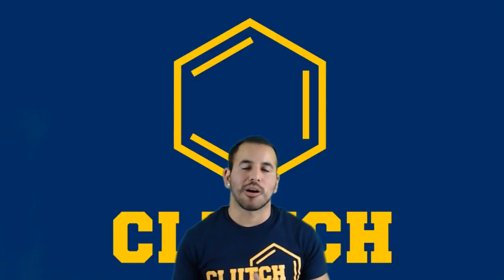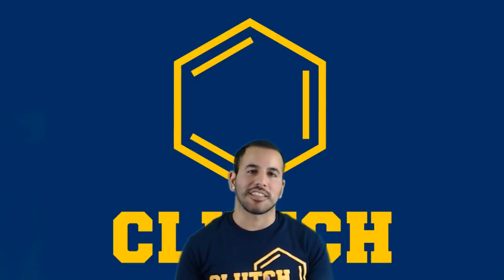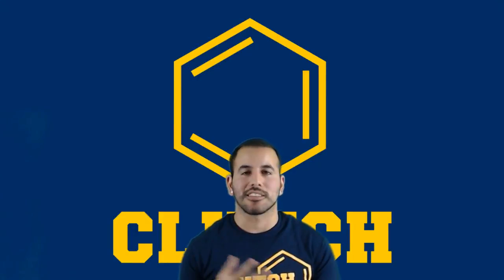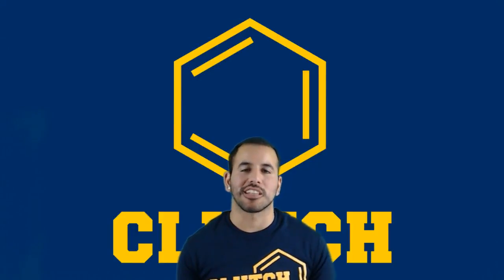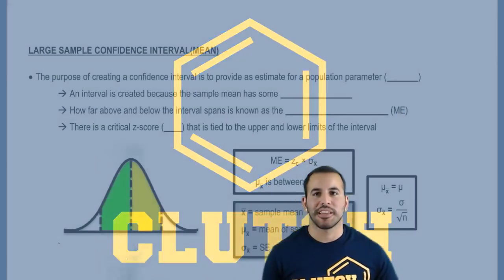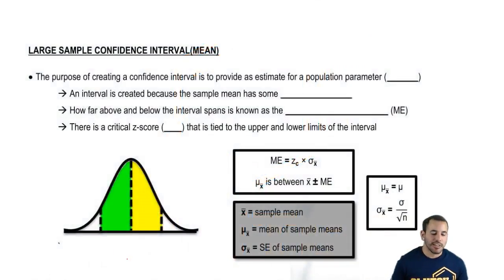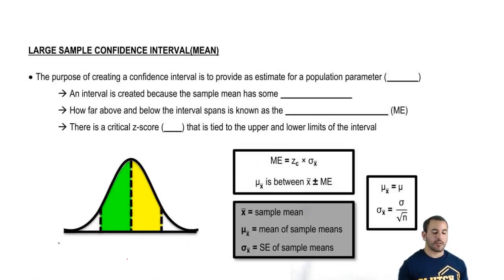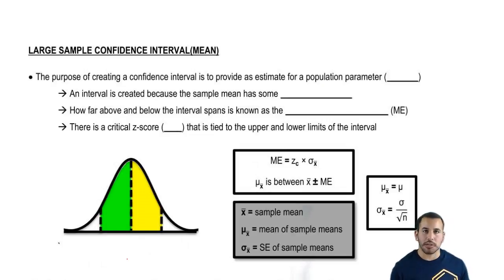Alright, so we just did some practice problems with the sample mean and sampling distribution. Now let's go ahead and move on to the confidence interval. The purpose of creating a confidence interval is to provide an estimate for a population parameter, and in this case we're talking about the mean.